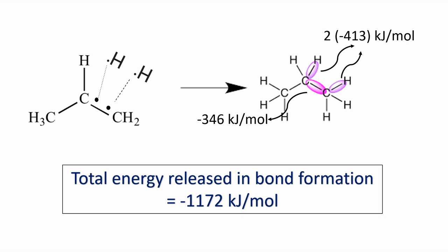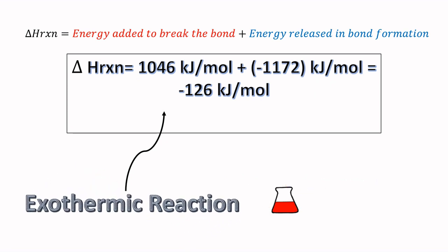So the total amount of energy released by the system is minus 1172 kilojoules per mole. For the total enthalpy of the system, we need to add the total amount of energy needed to break the bonds plus the total amount of energy released by the system. So the end result will be minus 126 kilojoules per mole. As the delta H value is negative, this shows that the reaction is an exothermic reaction. The energy will be released by the system.